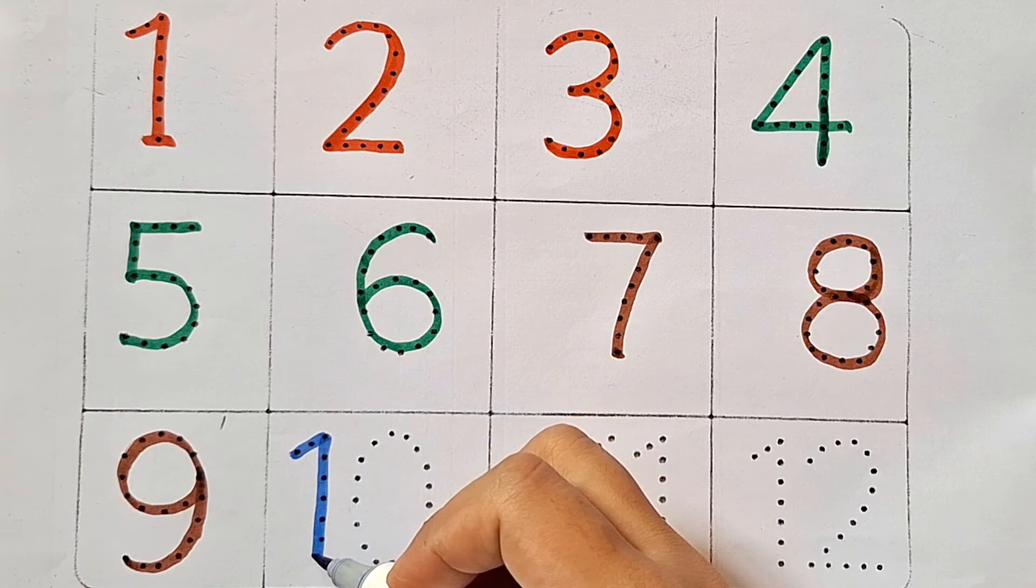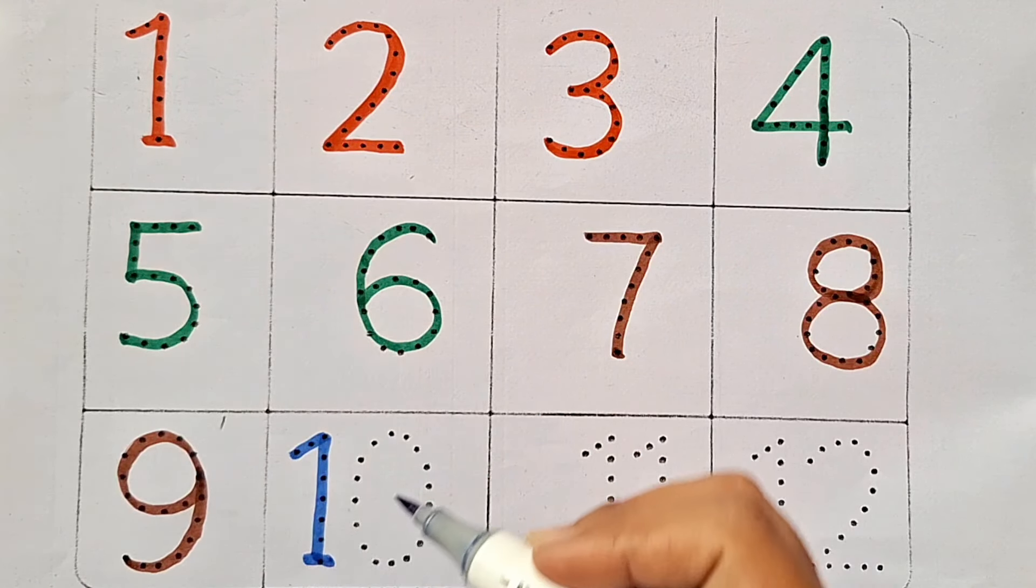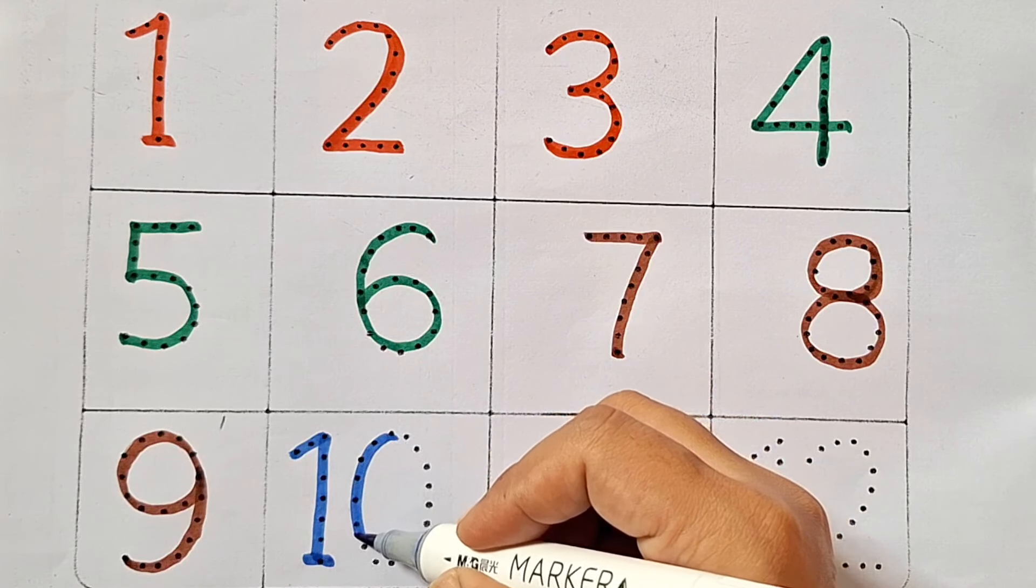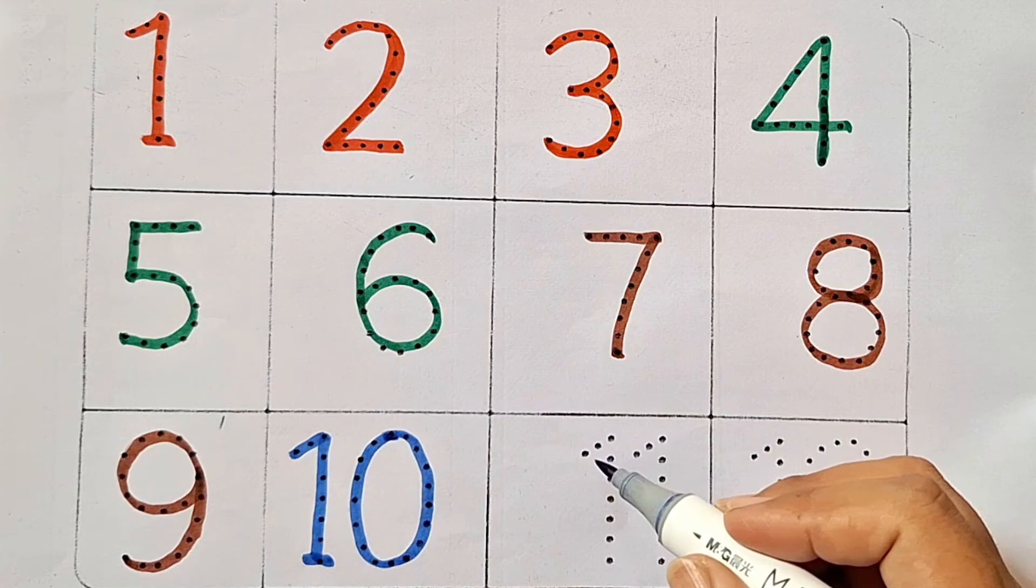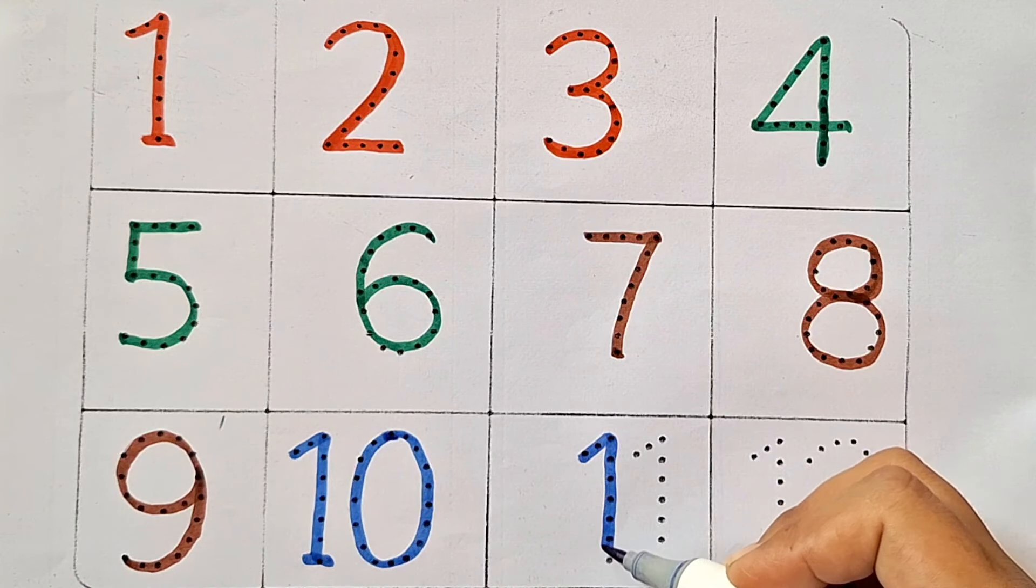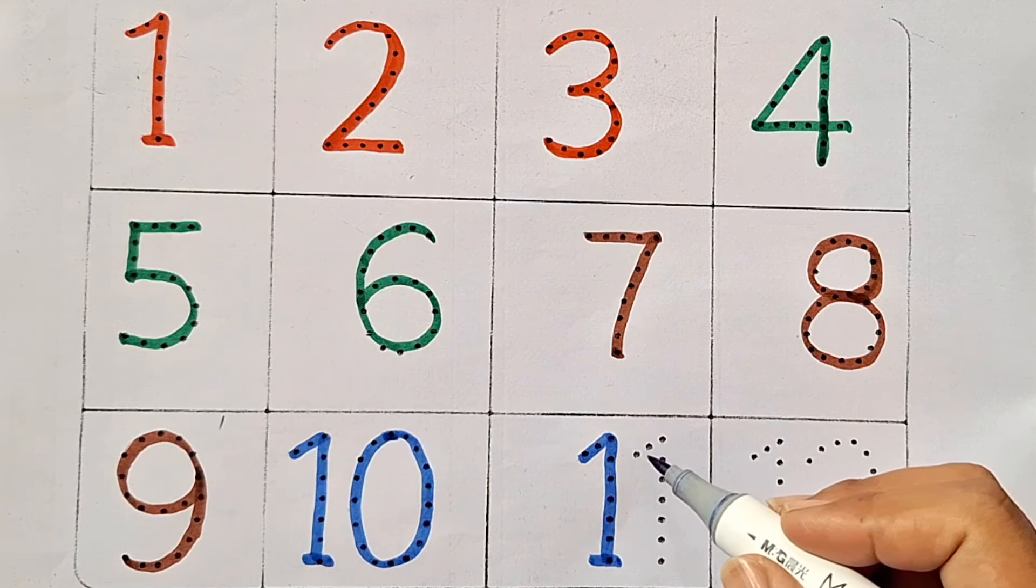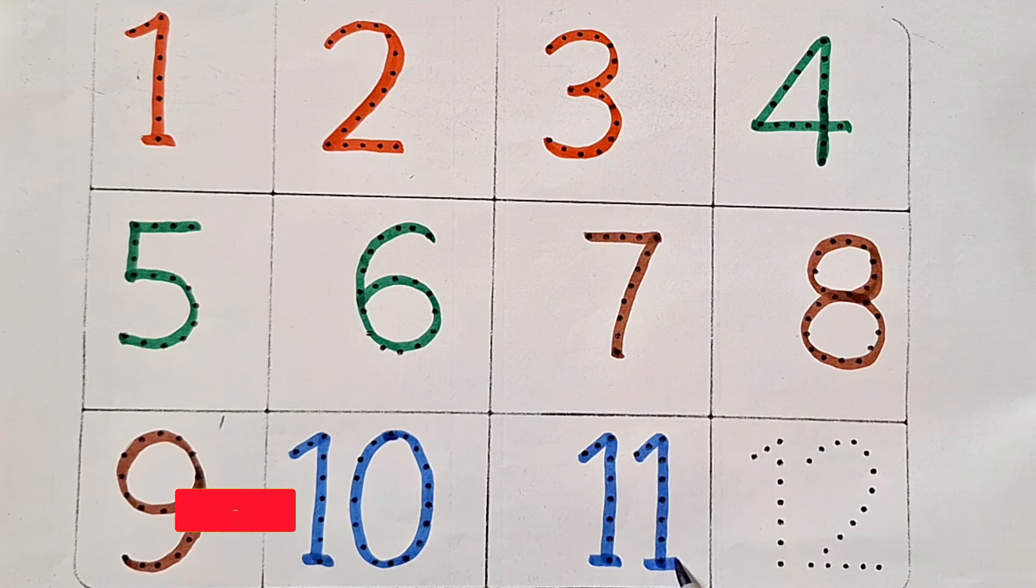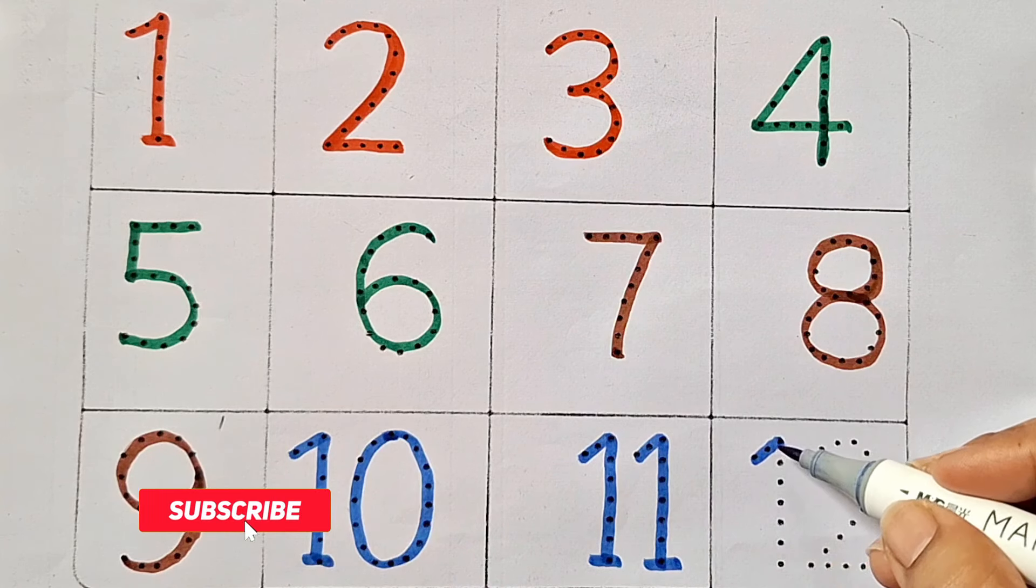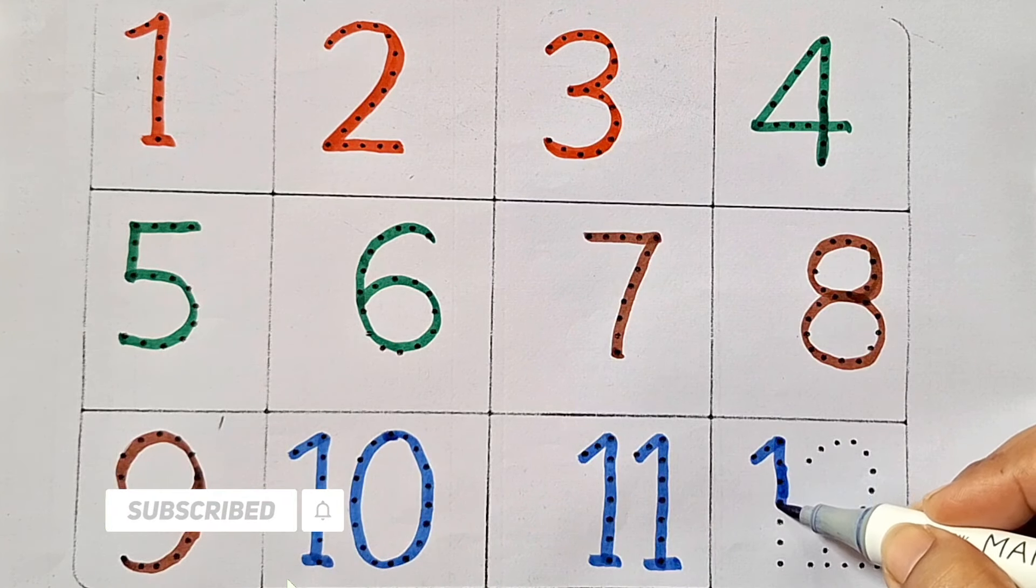Ten, this is ten. One zero, ten. Eleven, this is eleven. Twelve, this is twelve.